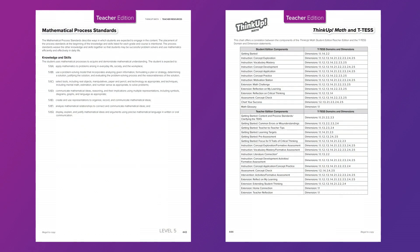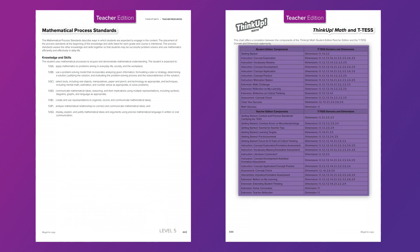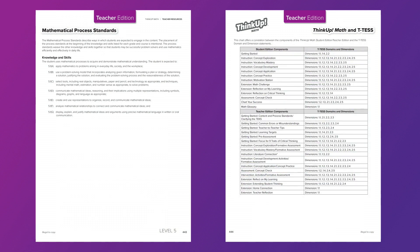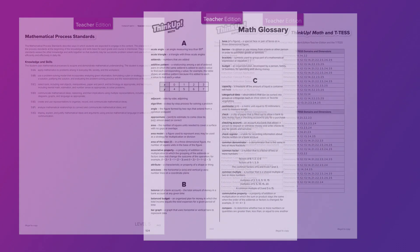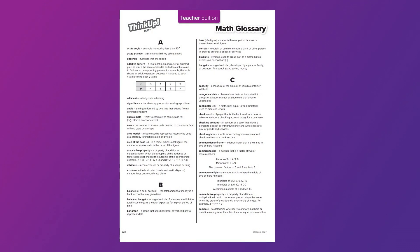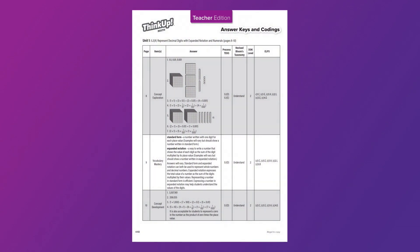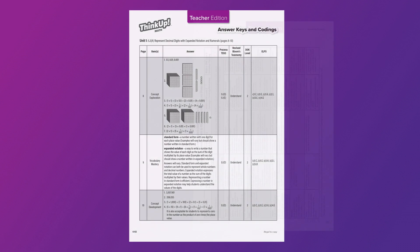The teacher resources in the back of your teacher edition provide lots of additional resources to support your instruction. From the mathematical process standards to the t-test correlation and critical thinking resources, there are lots of useful tools at your fingertips. You will also find the glossary with all your vocabulary words defined in the back as well. The answer keys and coding for the student practice can now be found on the online component where you access your ebooks.